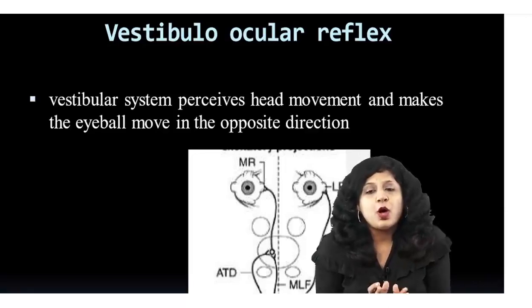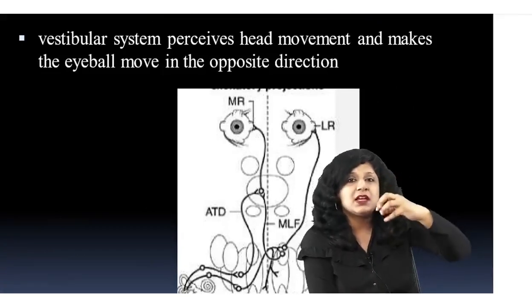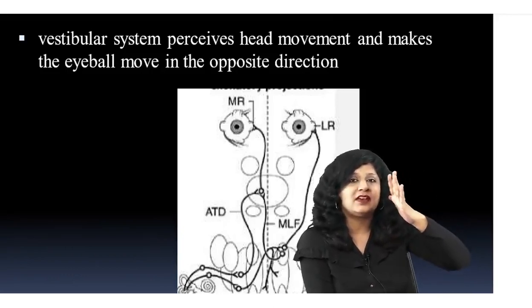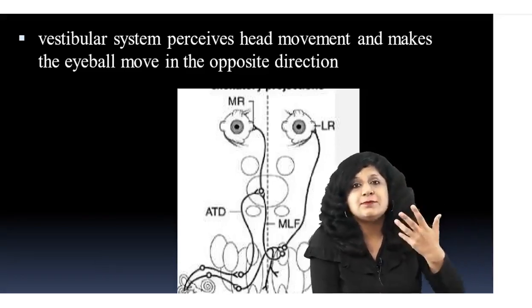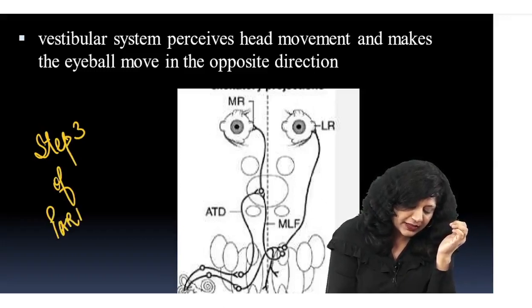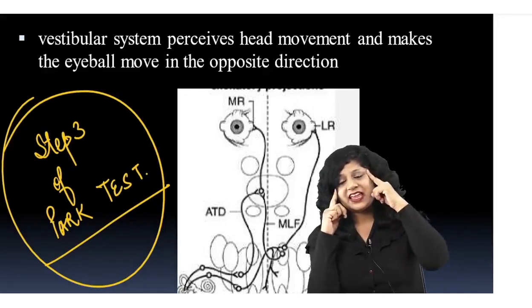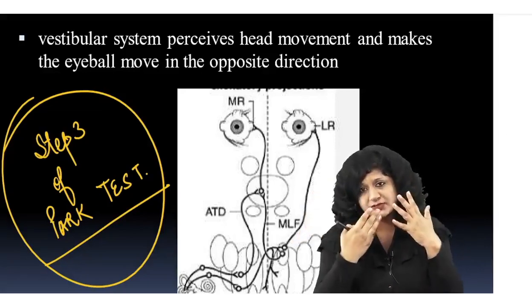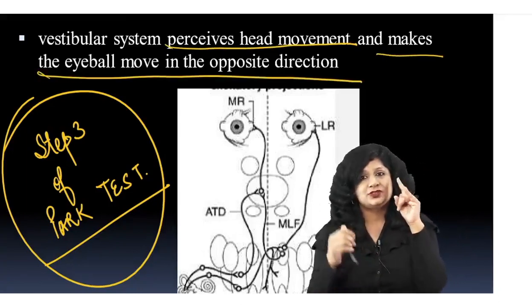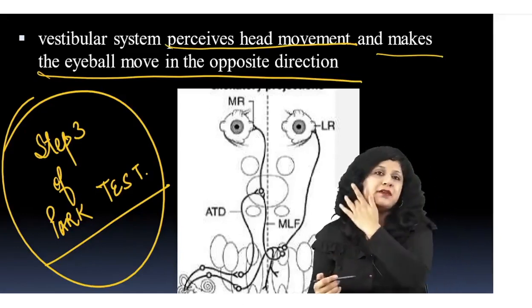The vestibular system perceives head movement; its main responsibility is to maintain body balance even when the head is moving. This will help in understanding step 3 of the Parks test — when the head tilts, the eyes move in the opposite direction. If moving the head one way, one eye will intort and the other will extort in order to maintain the normal vestibulo-ocular reflex.